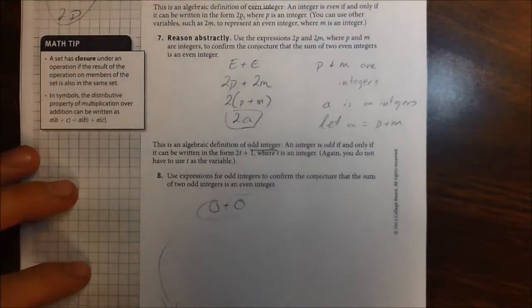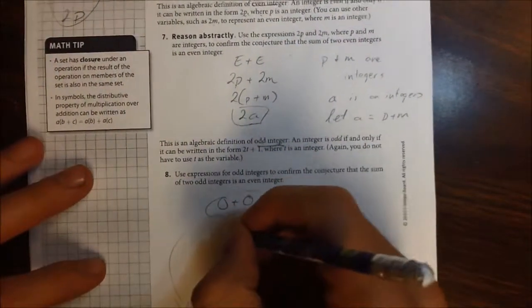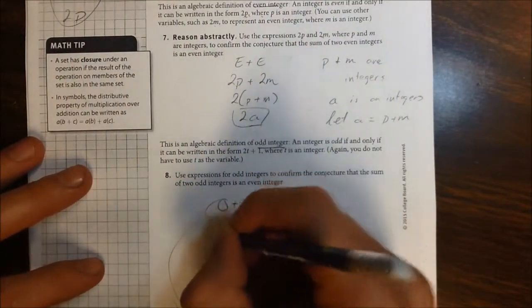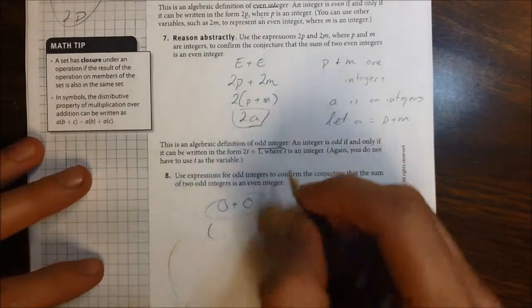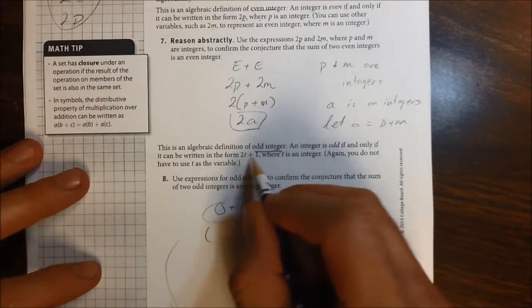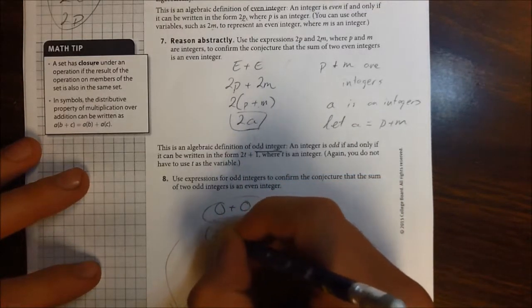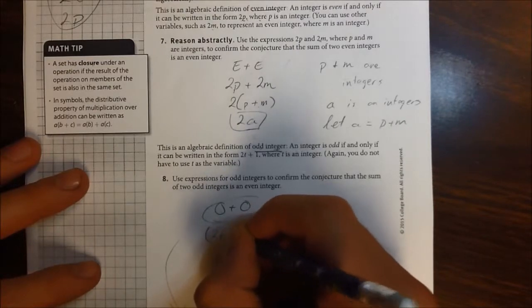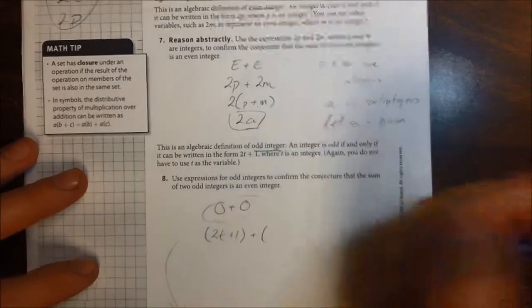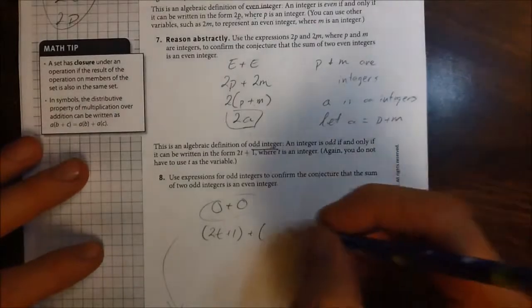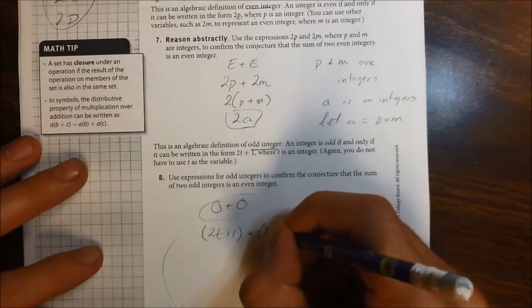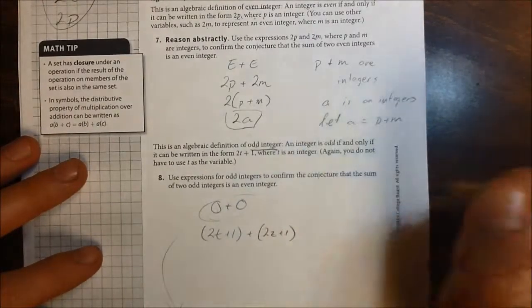So here we go. We have odd plus odd. I'm going to replace these o's with expressions that represent odd integers. So I'm going to say, how about 2, we'll use t, 2t plus 1 plus another odd and different integer. Let's say 2 times z plus 1. I like that.